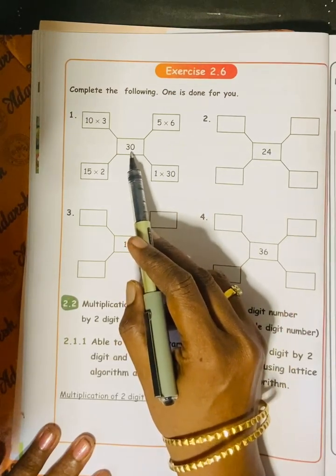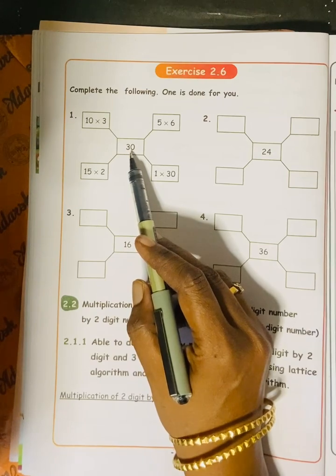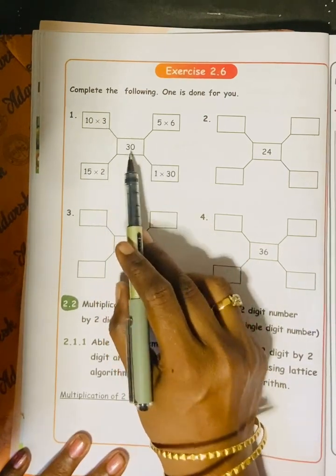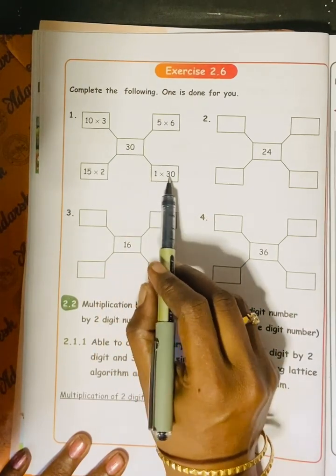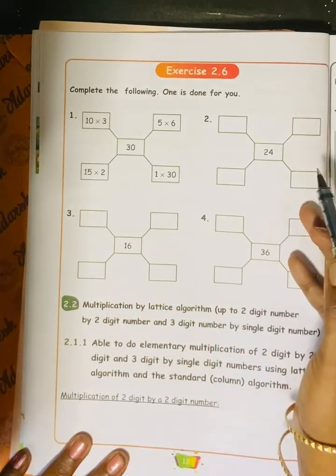See, 30. To find 30, we have to write the tables. 10 threes are 30, 5 sixes are 30, then 15 twos are 30, then 1 thirty is 30. So, like this we have to find out.